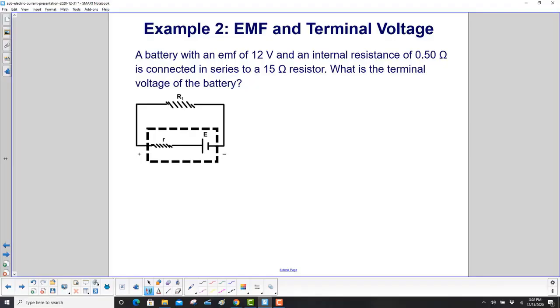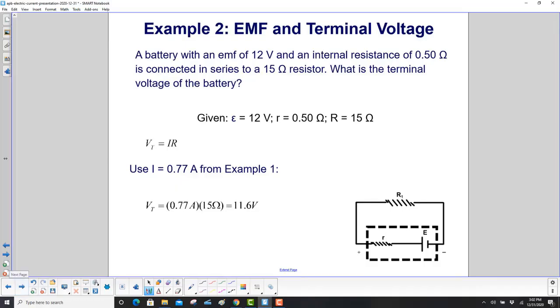Example 2: A battery with an EMF of 12 volts and an internal resistance of 0.50 ohms is connected in series to a 15-ohm resistor. What is the terminal voltage of the battery? We have the same givens from Example 1.